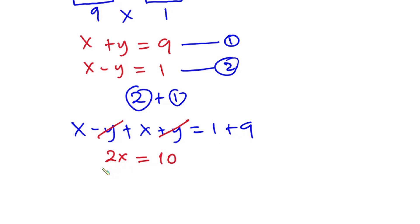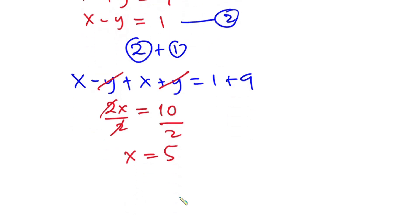Okay, so since we want to find the value of x, let's divide each side by 2 so that this will cancel this. Now we have x is equal to 10 divided by 2 is 5. Okay, so now we know the value of x.